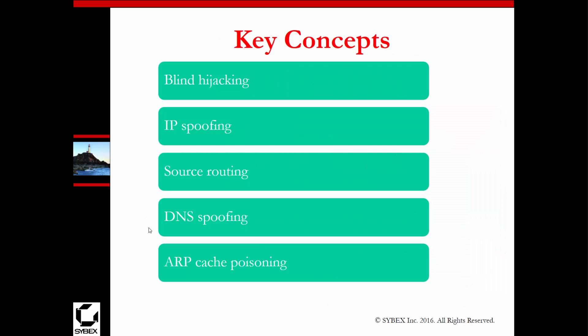Key concepts include blind hijacking, spoofing, source routing, DNS spoofing, and ARP cache poisoning. With ARP cache poisoning, if you have access to the ARP table, you can control traffic flow using ARP requests and MAC addresses at layer two. Source routing is similar but done at layer three. DNS spoofing operates at a higher level, but all of these are about controlling access between the source and destination.